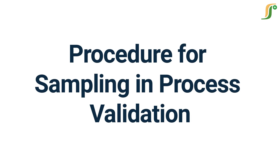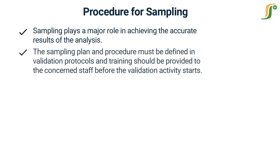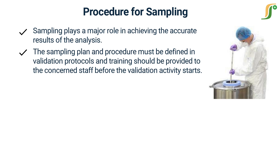Welcome to a new learning video on pharma guideline. Today we will discuss the procedure for sampling in process validation. Sampling plays a major role in achieving accurate results of the analysis. The sampling plan and procedure must be defined in validation protocols, and training should be provided to the concerned staff before the validation activity starts.